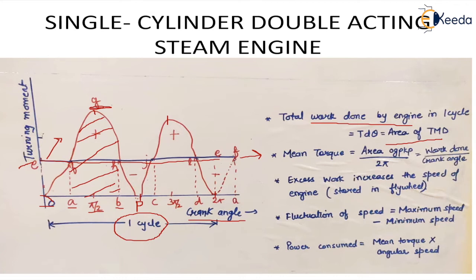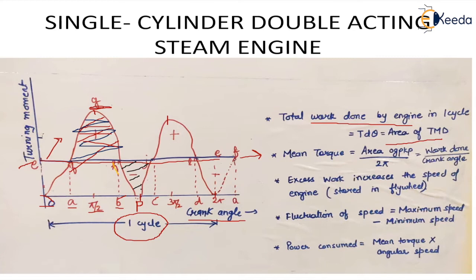The work required to overcome the resisting torque is only a portion of the total work done. The extra work — area FGH — is the additional work done by the system, and this extra work is stored in the flywheel as rotational energy, increasing the engine speed. When the engine goes from point B to C, the work produced is HPJ, but the work required is BHJC. This deficient work is supplied from the excess energy already stored in the flywheel.